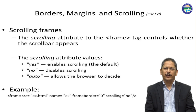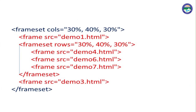Here is one more program. The frameset columns are 30%, 40%, and 30%, dividing the frame into three columns. The first column displays demo1.html. The second column is divided into three different rows displaying demo4, demo6, and demo7 — these three frames appear in the middle part of 40% size. The third column displays demo3.html and is not further subdivided.